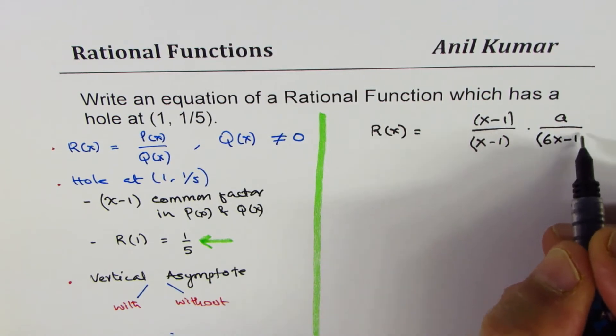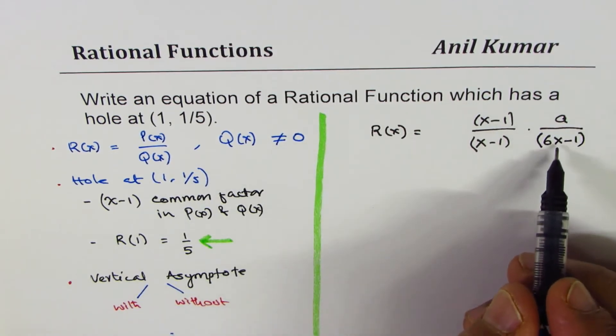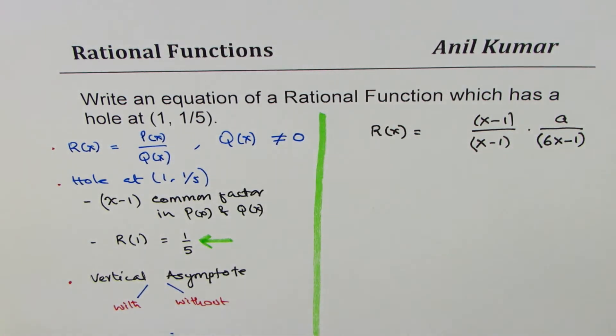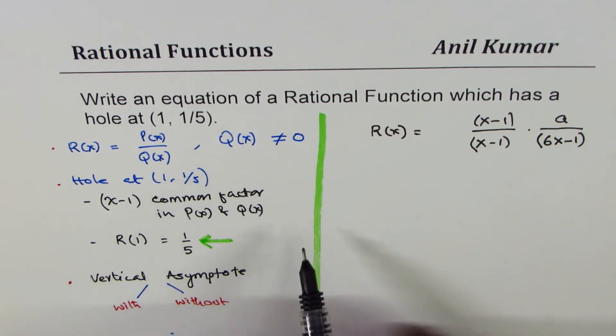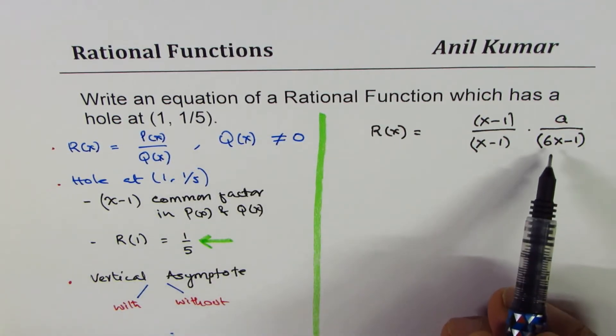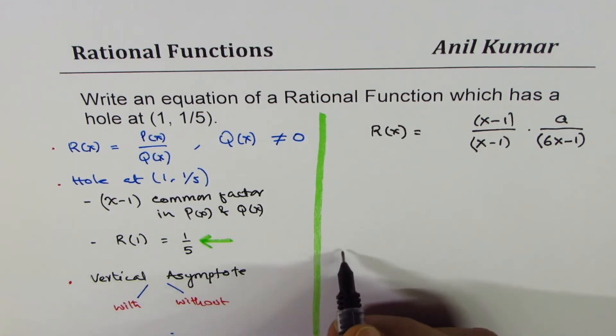So I could use a term like 6x-1. Do you see that? Now if I put x as 1, then it is 6 minus 1, which will be 5. Perfect. So that seems to be a good combination to satisfy the given condition, and in this case there is going to be a vertical asymptote.